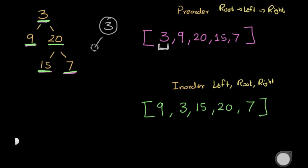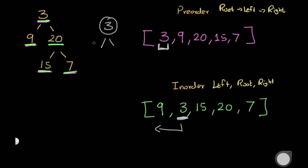Now how do we know what falls in the left and right subtrees? We look for the root value — 3 — inside the in-order traversal. Everything to the left of it in in-order belongs to the left subtree (just 9 here), and everything to the right belongs to the right subtree: 15, 20, and 7. This tells us how to break the problem into smaller parts.